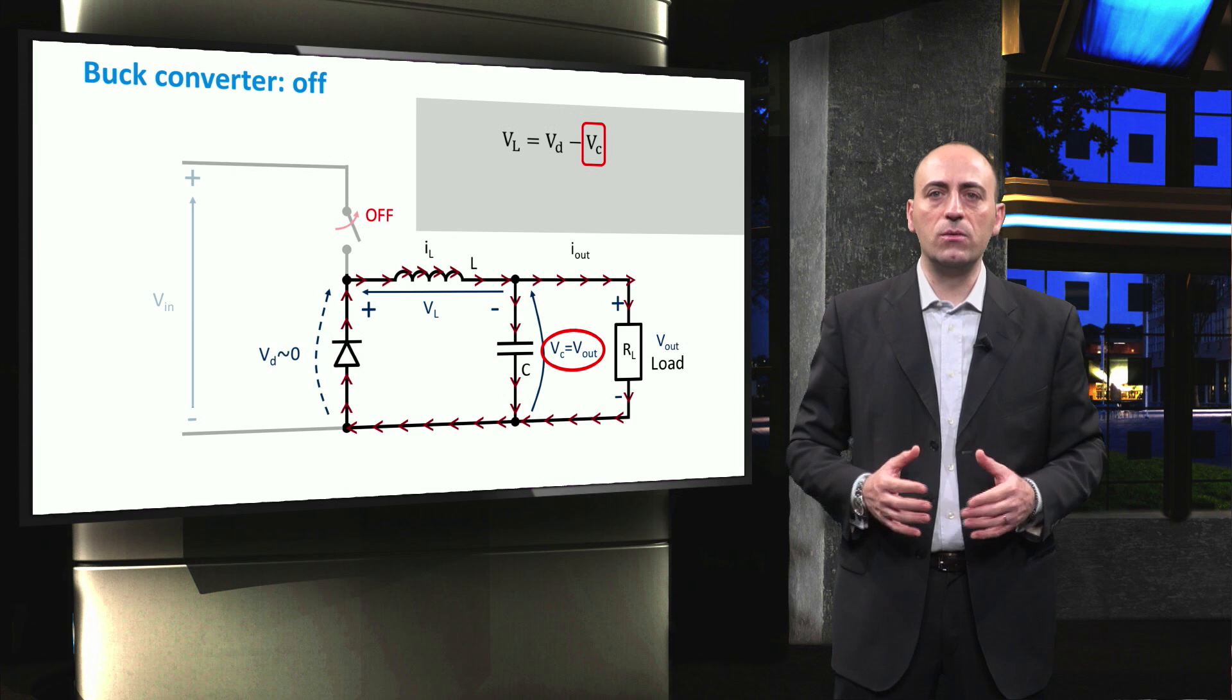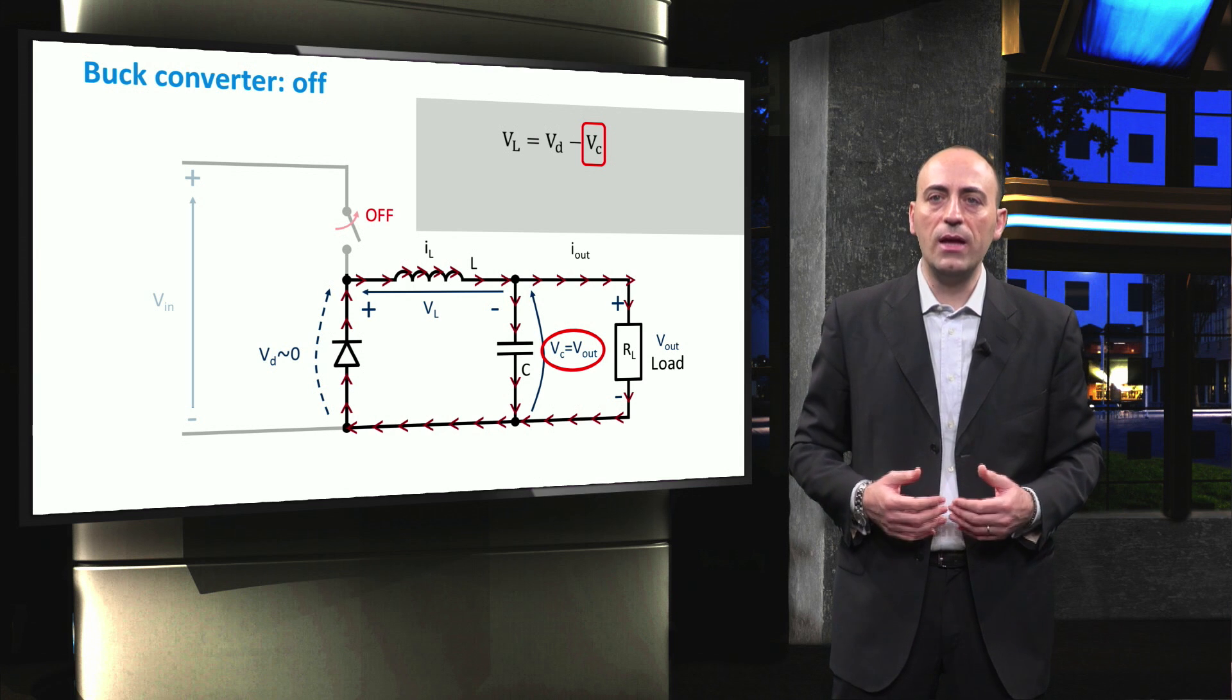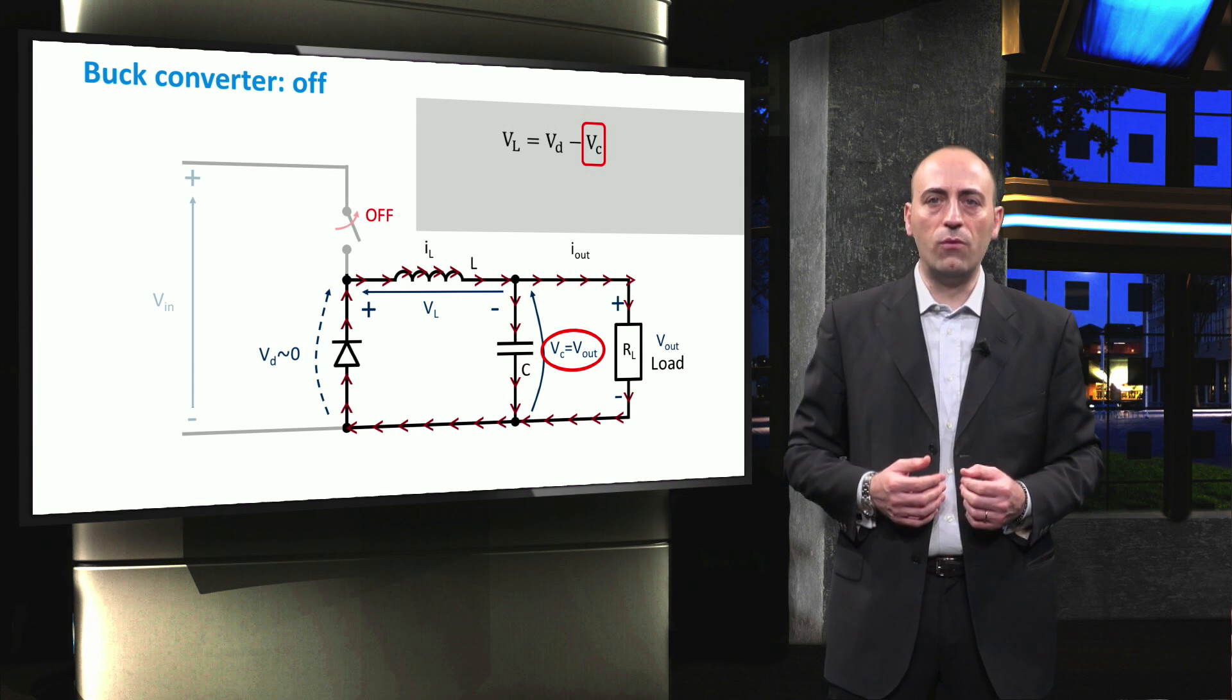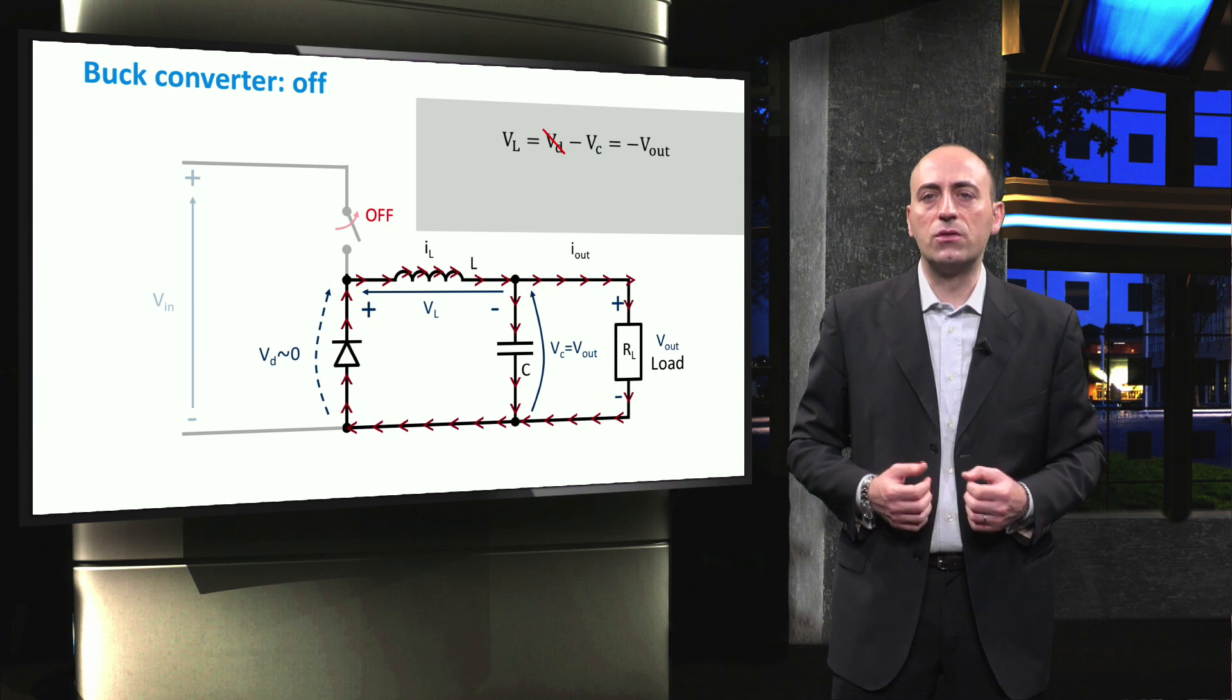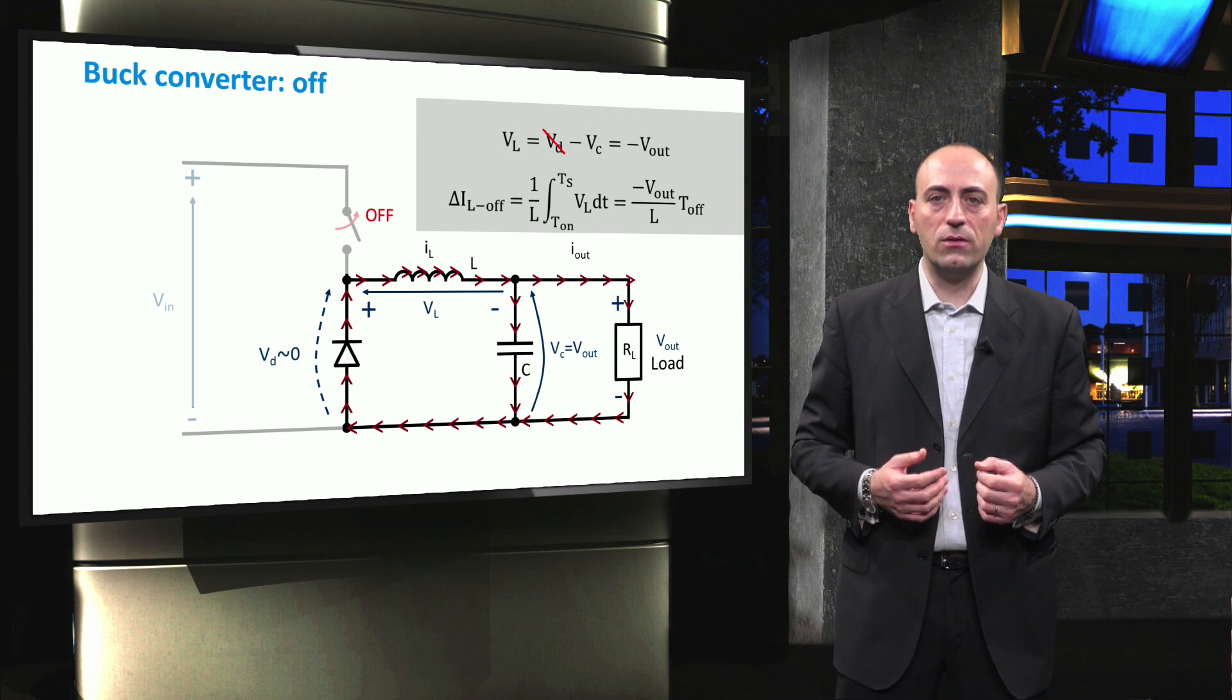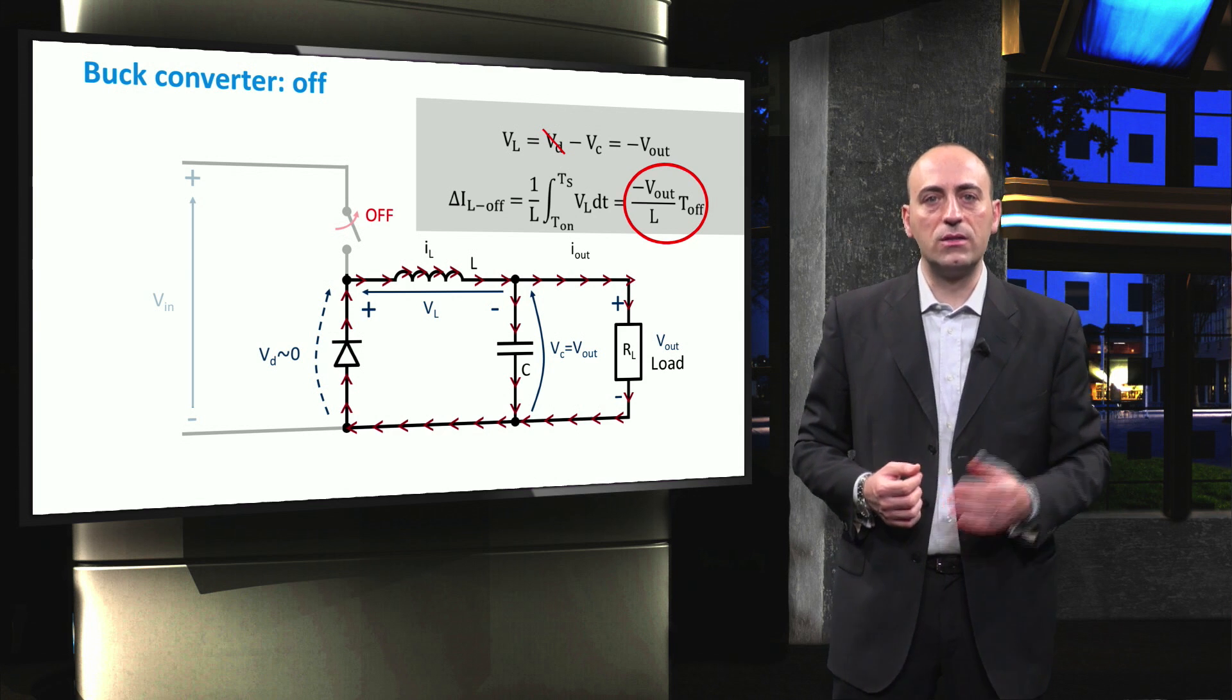In this case, we should also consider that the voltage across the diode requires a very small bias to start conducting the current, and most of the time this voltage is negligible or is in the range of 0.4V or even less. Then the voltage across the coil is just the opposite of the voltage across the load. Once again, we can calculate the integral of the current through the coil and find out that the difference is negative, meaning that the current starts to decrease.